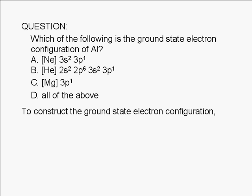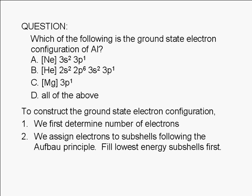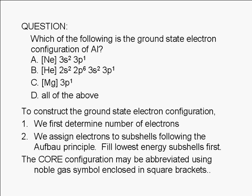To construct the ground state electron configuration of an atom, we do the following. First, we determine the number of electrons. Then we assign electrons to the subshells following the Aufbau principle. We fill the lowest energy subshells first. The core configuration may be abbreviated using the symbol for a noble gas enclosed in square brackets.